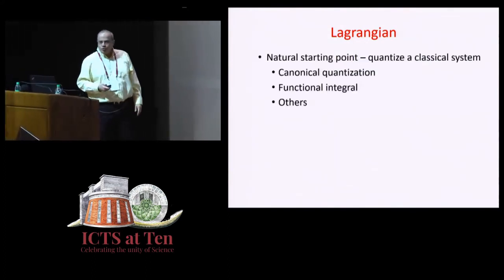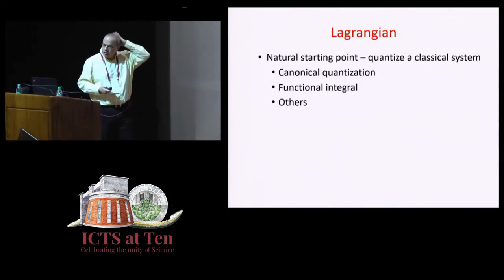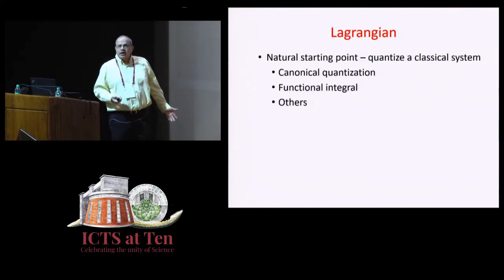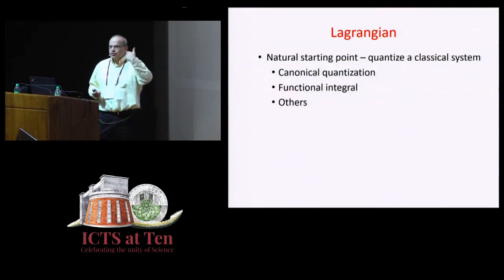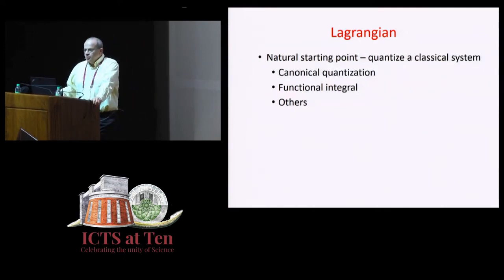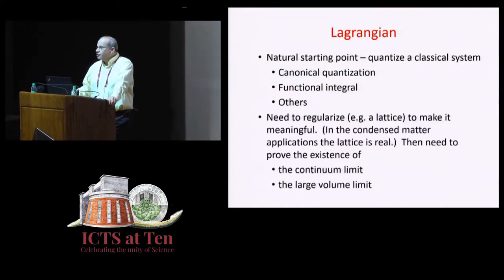The alternative is to use Lagrangian. This is the most traditional approach. That's the most, that here, the advantage is that we have a good starting point. We know what we're doing. We write some classical Lagrangian, and then we quantize it. And we can use canonical quantization or functional integrals. There are other more sophisticated methods.